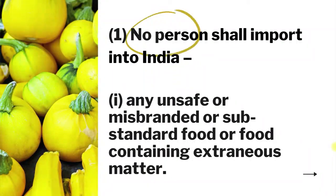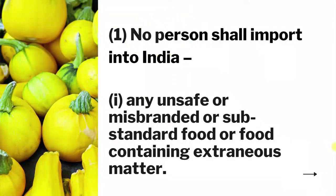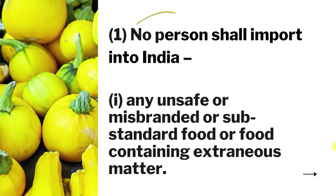If you want to clearly understand these definitions — unsafe, misbranded, substandard food, and extraneous matter — these have already been covered in our previous lectures. I will paste the link at the end in the description so you can go and learn about these definitions in detail, because unsafe food, misbranded food, substandard food, and extraneous matter have been properly defined under the FSSAI Act.